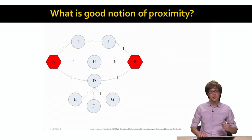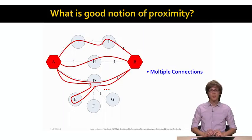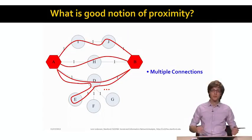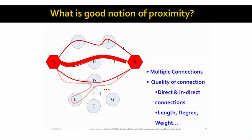So the question is, what is a good notion of proximity? If you think about a good notion of proximity, it would be a metric that would consider that there are multiple ways to get from one node to another, that there are multiple paths. And another one is that it would also consider the quality or the weight of connections in terms of whether the connections are directed or not, how long these connections are, how strong they are, what is the degree of the node, and so on.